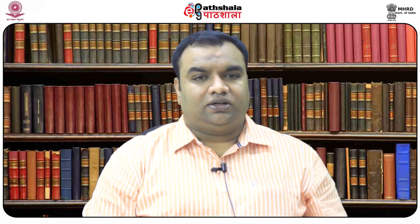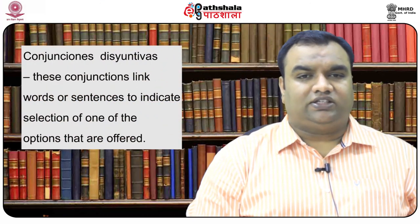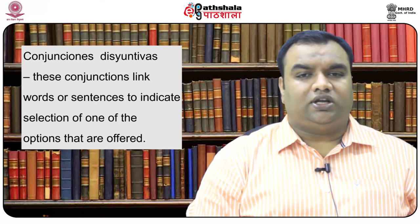Coming to the next sub-category: conjunciones disyuntivas. These conjunctions link words or sentences to indicate selection of one of the options that are offered. These are: o and u. O means 'or' or 'either', and u also means 'or'. Let us see some examples. In English: What do you want to have — coffee or tea?